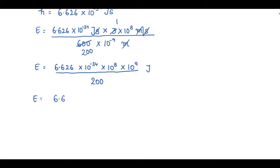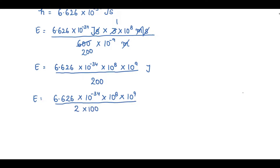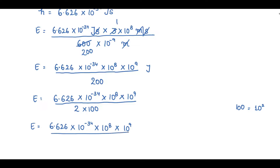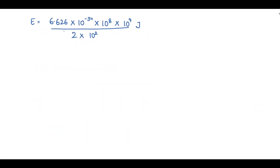We write 200 as 2 × 10². So E = 6.626 × 10⁻³⁴ × 10⁸ × 10⁹ ÷ (2 × 10²). Dividing 6.626 by 2 gives 3.313. The 10² in the denominator becomes 10⁻² in the numerator, giving us 3.31 × 10⁻³⁴ × 10⁸ × 10⁹ × 10⁻² joules.